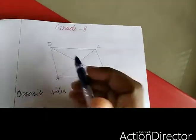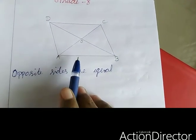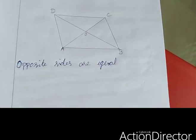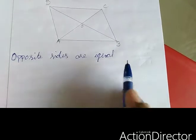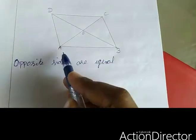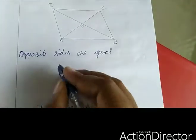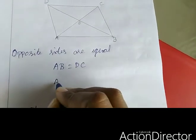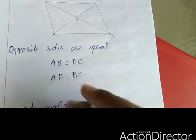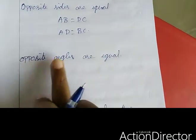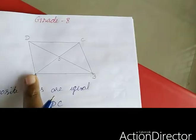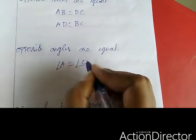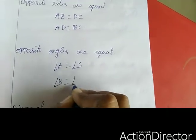See here, this is the parallelogram. ABCD is a parallelogram. In a parallelogram we have some rules. Opposite sides are equal — that means AB equal to DC, as well as AD equal to BC. Next, opposite angles are equal — that means angle A equal to angle C, and angle B equal to angle D.